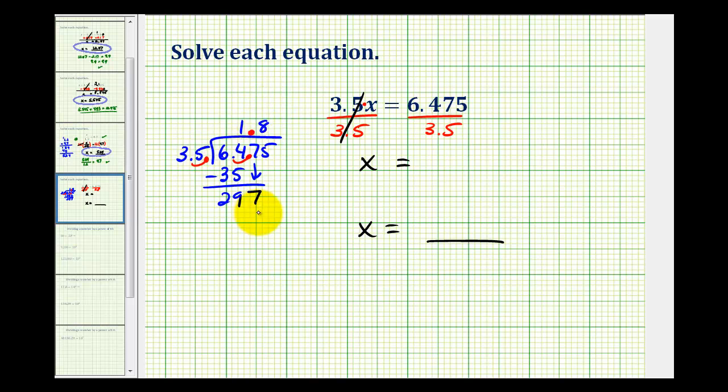8 times 5 would be 40, carry a 4. 8 times 3 is 24, plus 4 is 28. This looks good because the difference is 17, which is less than 35. Bring down the next digit, which is 5. Now we need to figure out how many 35s there are in 175. Well, that'll be 5. 5 times 5 is 25, carry a 2. 5 times 3 is 15, plus 2, that's 17.